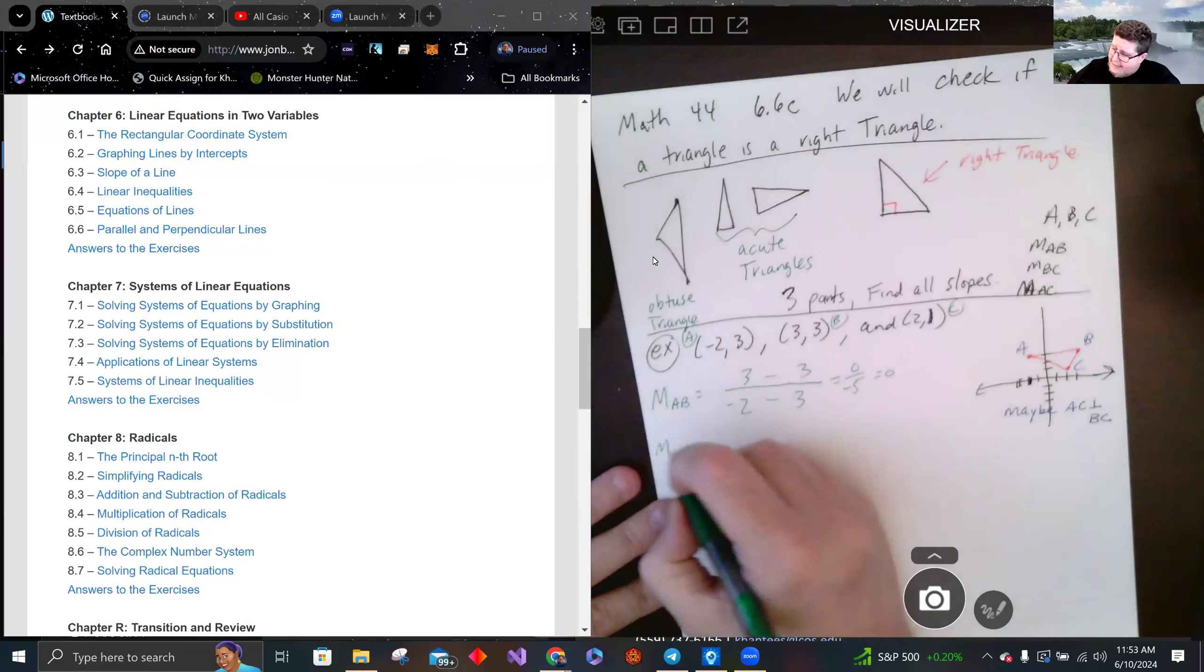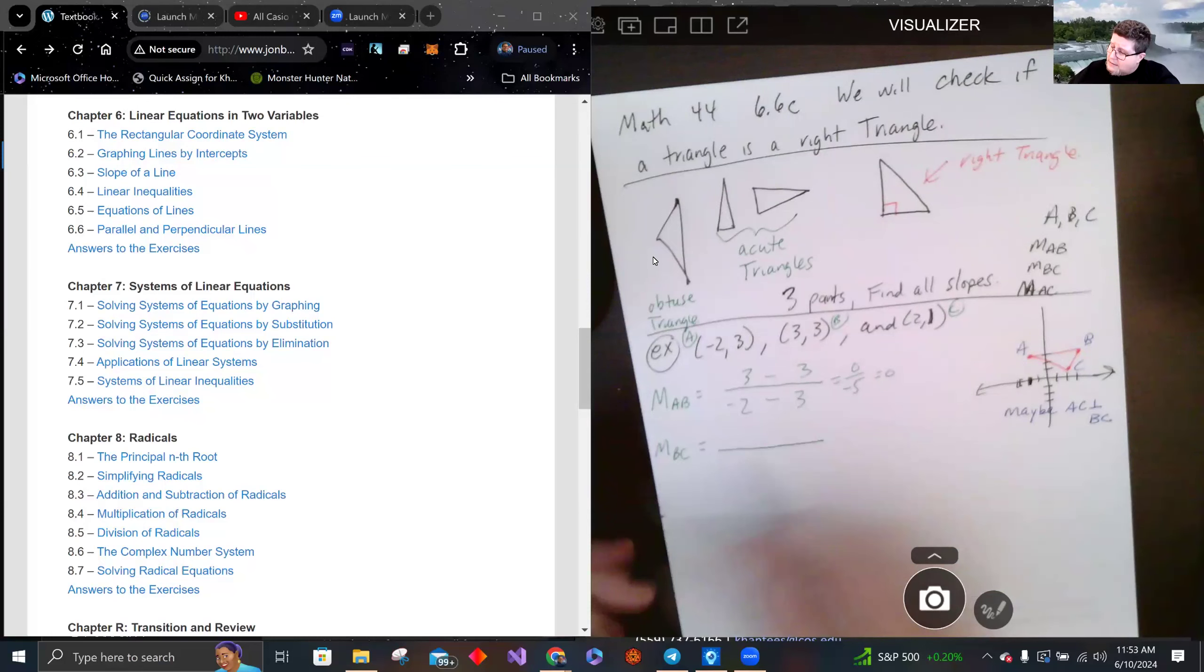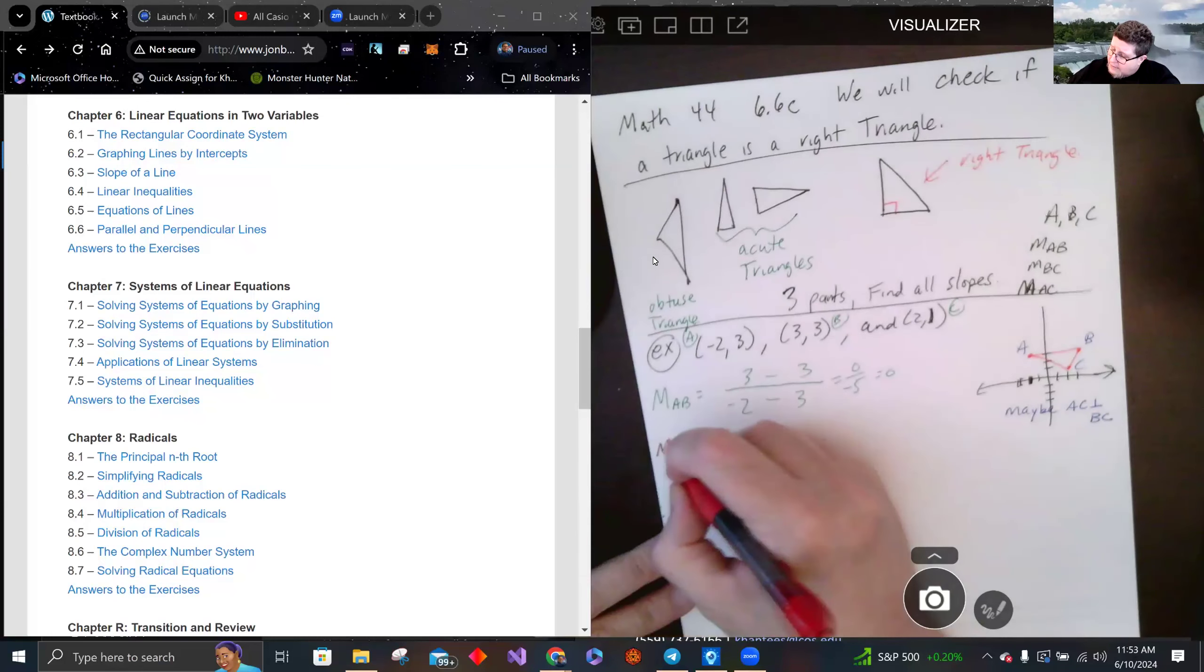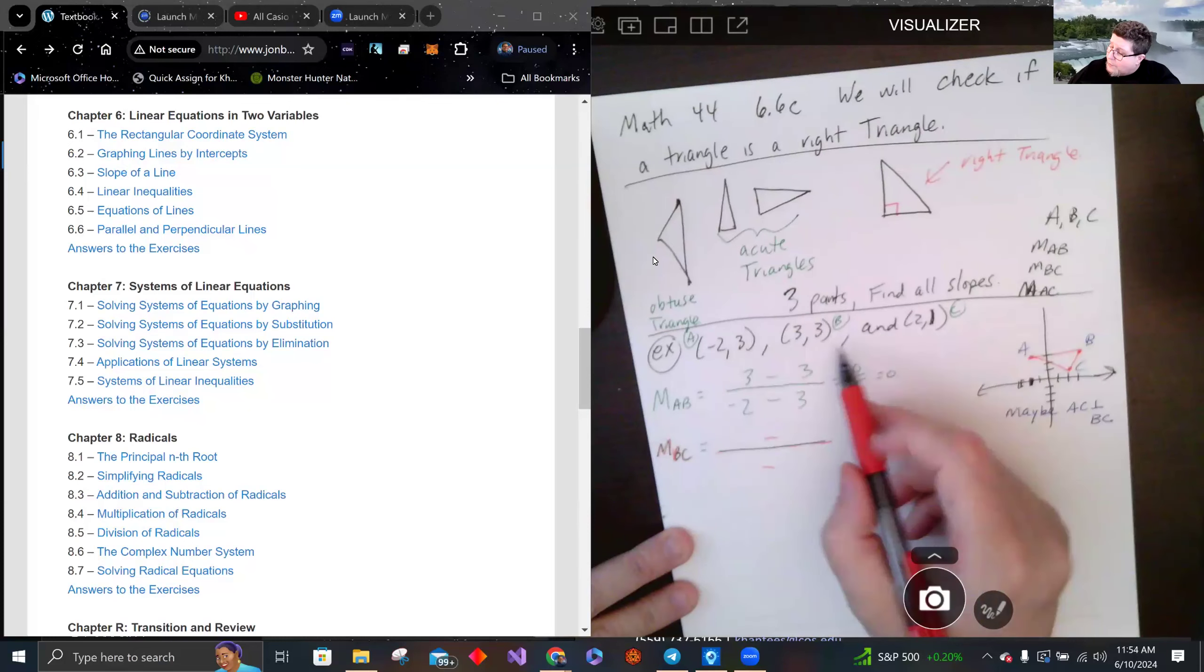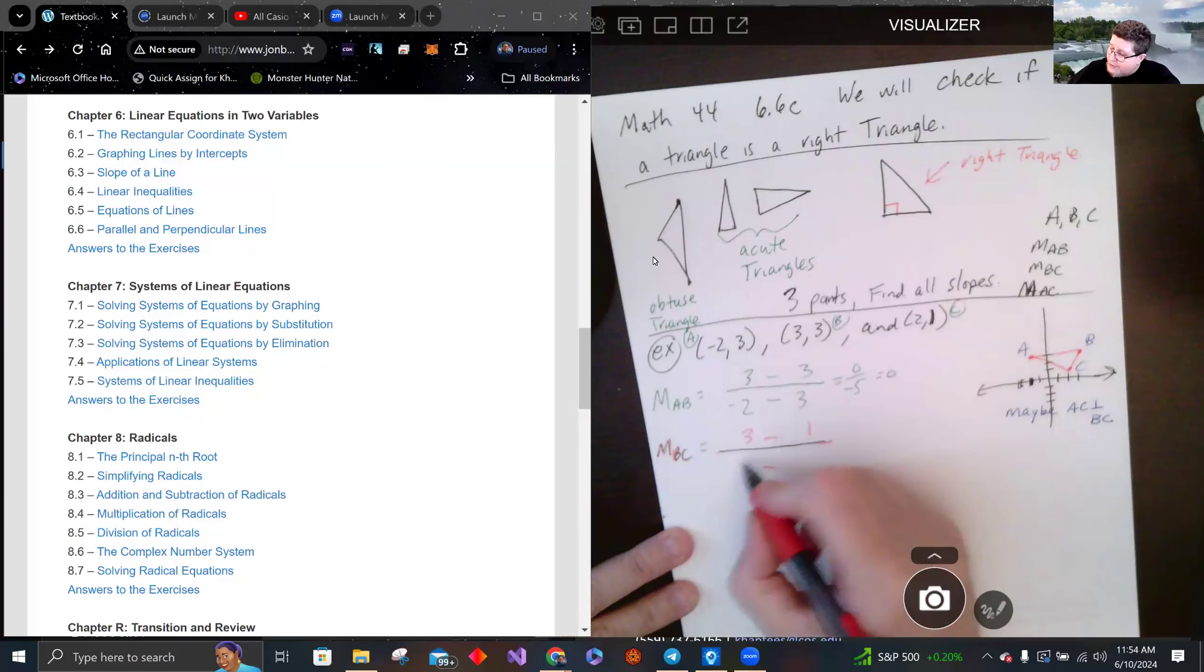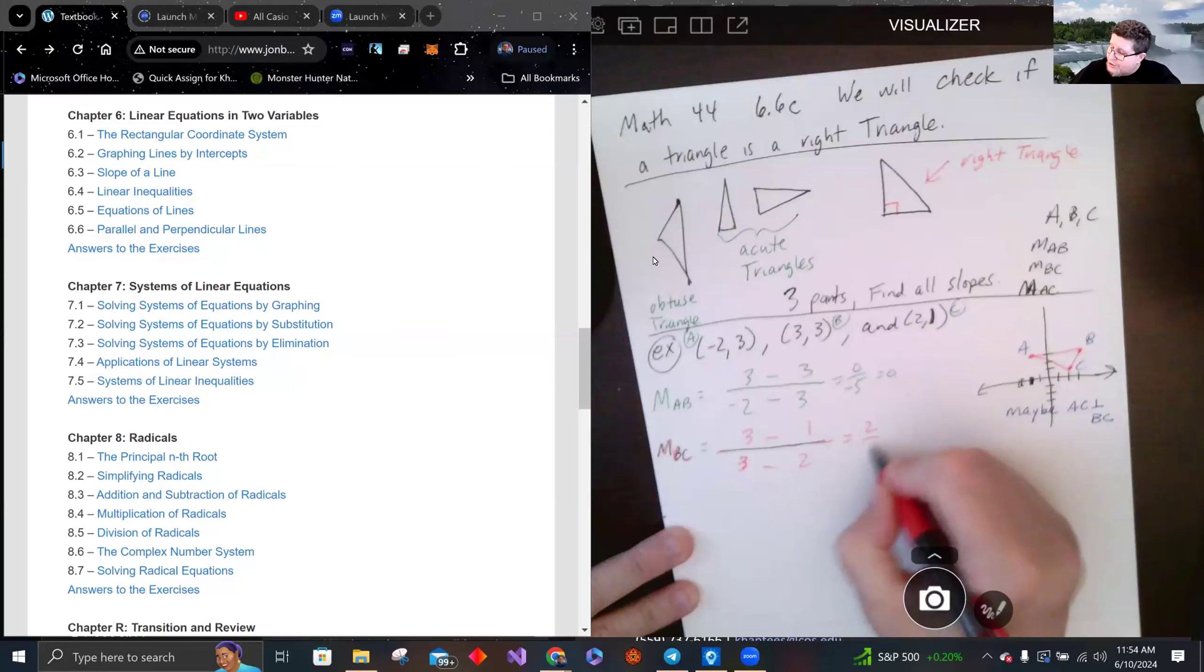m_BC, let's do this in a different color. (1-3)/(2-3), this is 2 over 1, which is 2.